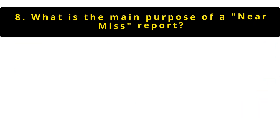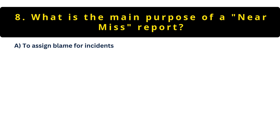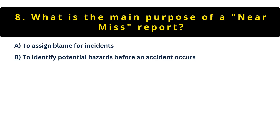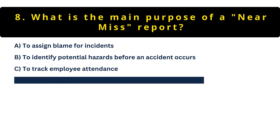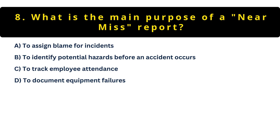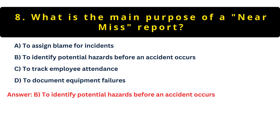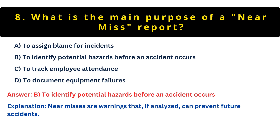Question 8: What's the main purpose of a near-miss report? Option A: To assign blame. Option B: To identify hazards before an accident. Option C: To track attendance. Option D: To document equipment failures. The right answer is B — to identify hazards before an accident. Near-misses are free lessons. They reveal risks that didn't cause harm this time but could next time. Reporting them helps prevent future incidents.